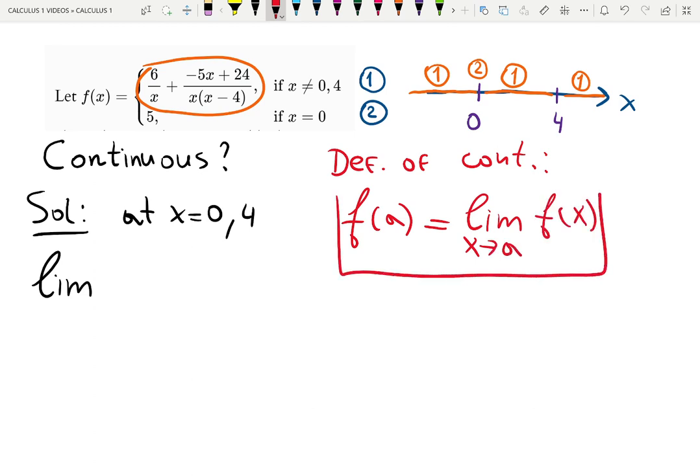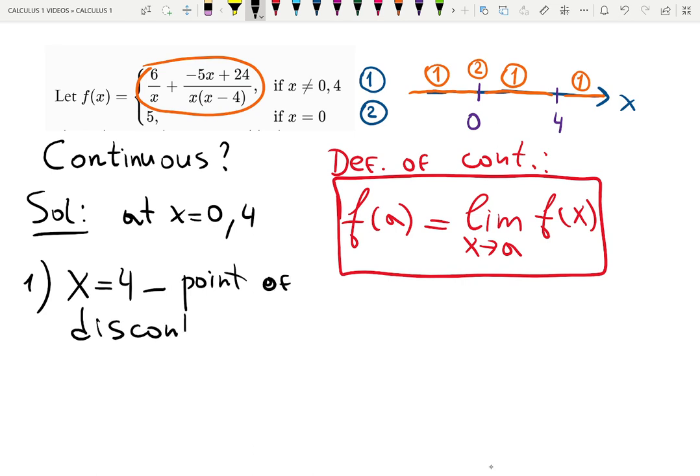Not only four is a ready-point discontinuity because f at four does not exist right away, but also we're going to find now that it is a vertical asymptote. Step one. x equals four definitely is a point of discontinuity. Point of discontinuity, which means function is not continuous at that point. Why? Because f at four is not even defined. Not defined. There's none. None of this notation tells us what is happening at four.